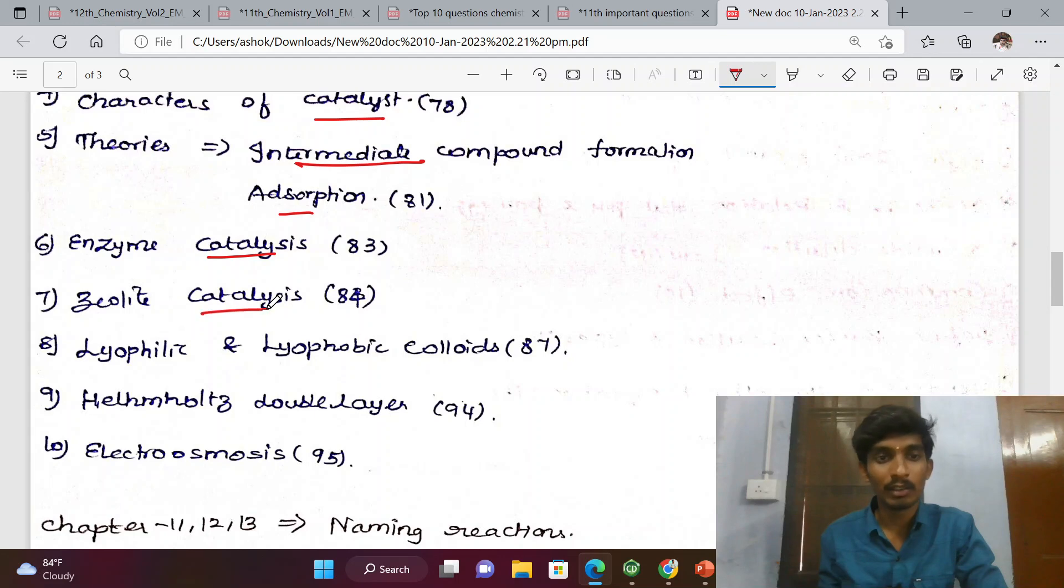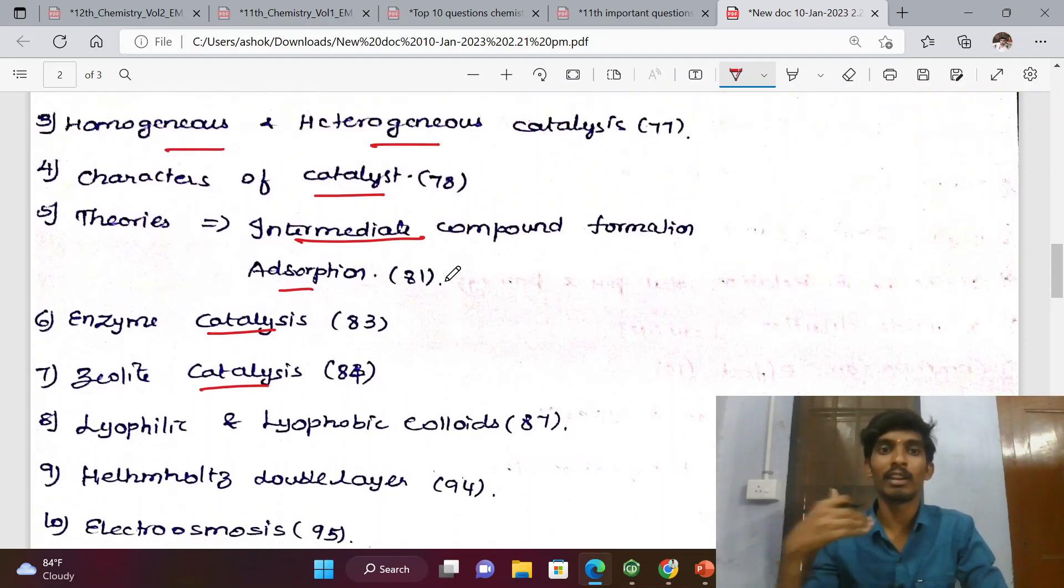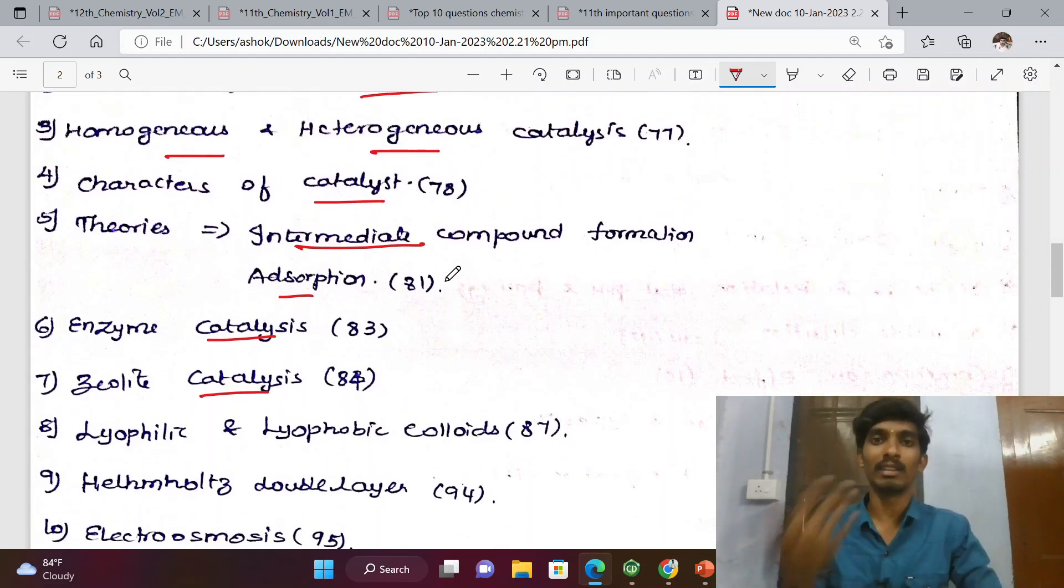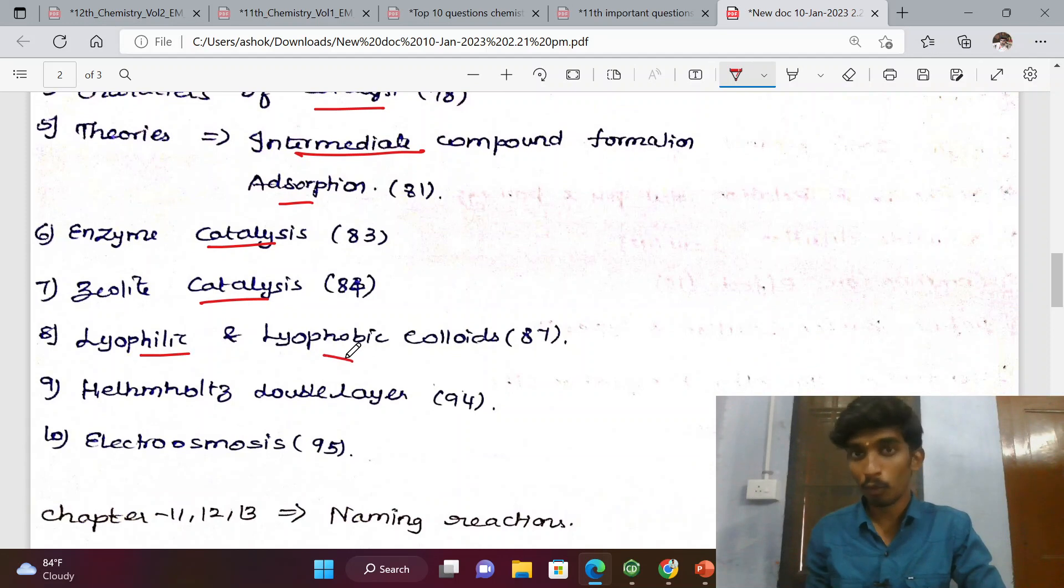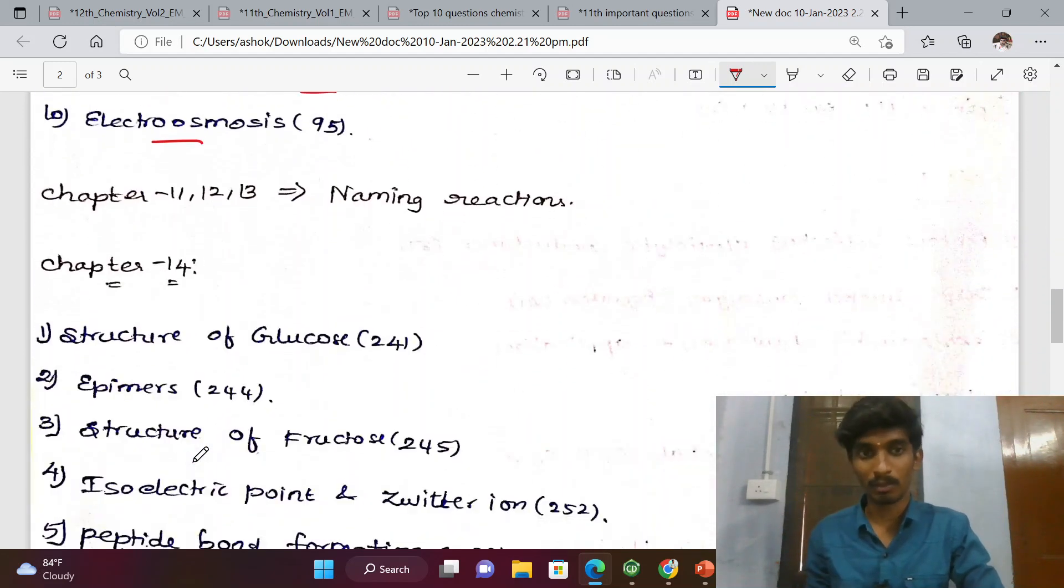Enzyme catalysis, zeolite catalysis - catalysis section has many area questions: homogeneous-heterogeneous, enzyme, autocatalysis, positive. All are very important questions. Next, lyophilic and lyophobic colloids, Helmholtz double layer, and electro-osmosis. These are the very important questions of surface chemistry.